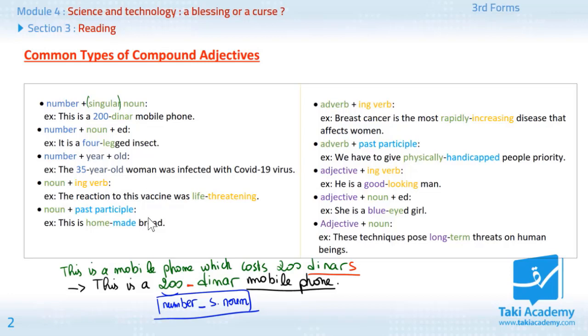Next one. Noun plus ing verb. Example. The reaction to this vaccine was life threatening. Life is a noun. Threatening is an ing verb. Next. Noun plus past participle.